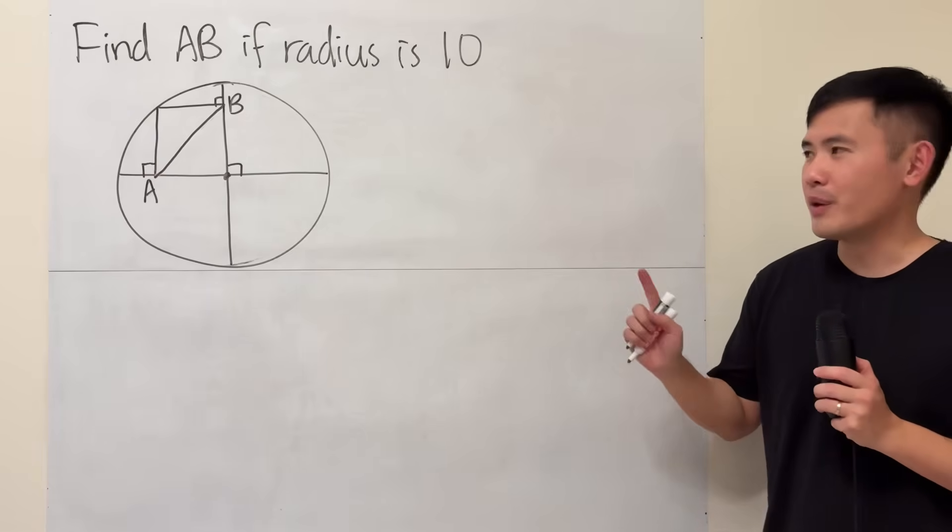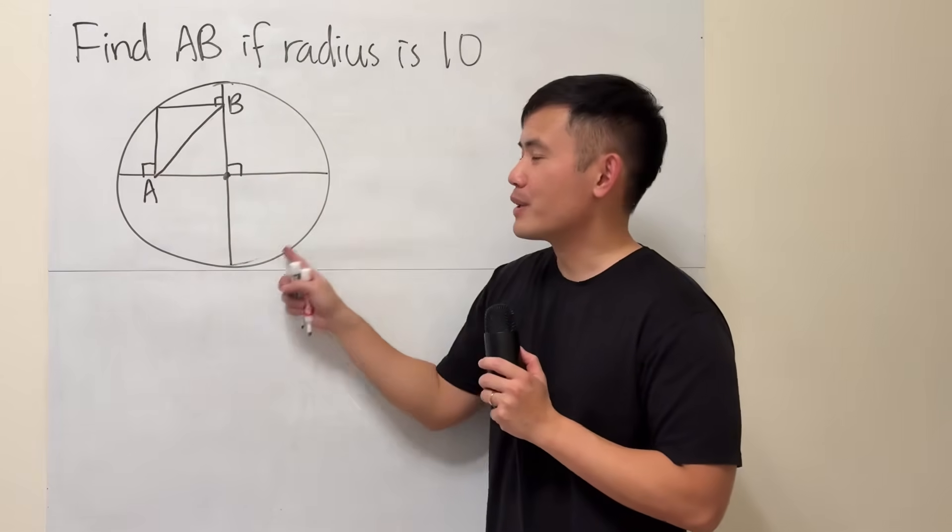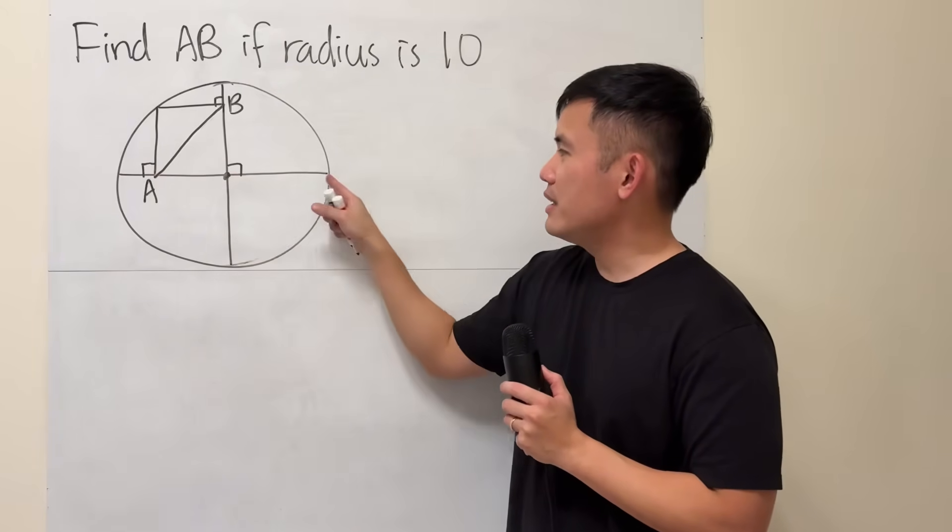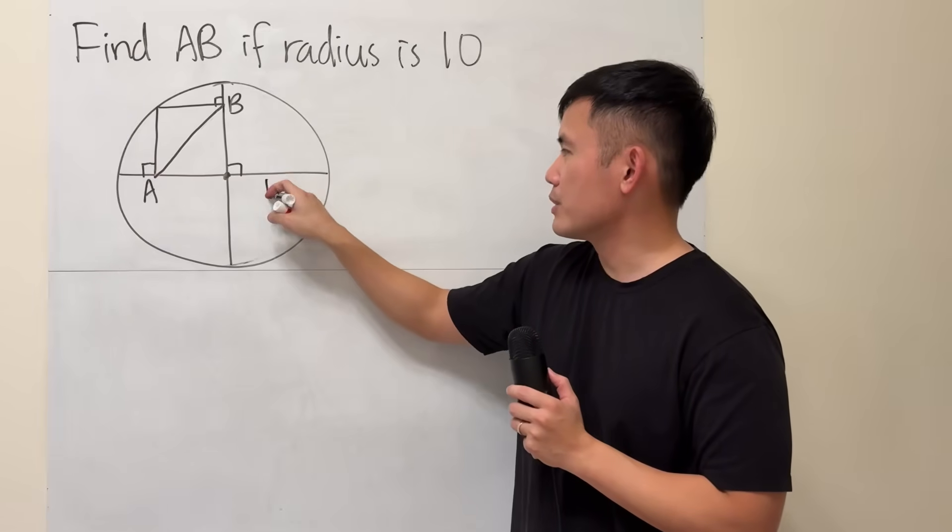This is actually a very fun one. So we have a circle here, and this is the center of the circle. And we know the radius is 10, so I'm just going to denote 10 right here.